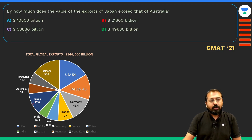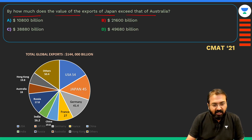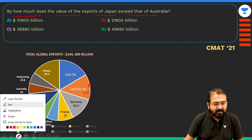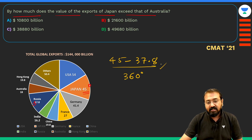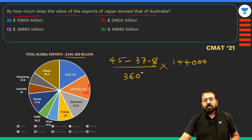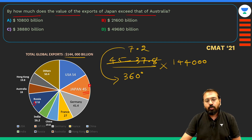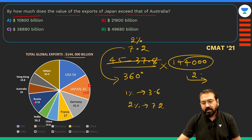Moving to the next question: by how much does the value of exports of Japan exceed that of Australia? Japan is 45° and Australia is 18°, so the difference is 27°. Now 27° as a percentage of 360° is 7.5% — since 1% equals 3.6°, so 7.5% equals 27°. We need to find 7.5% of the total exports of 144,000 billion.